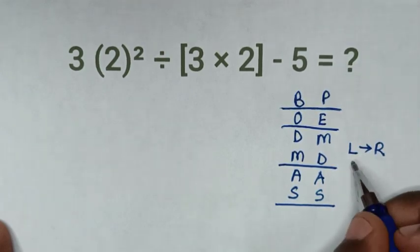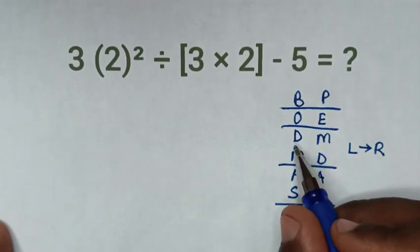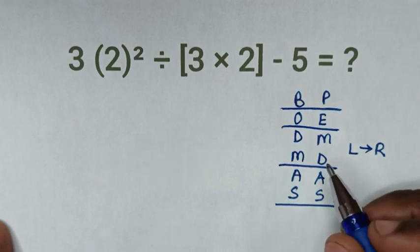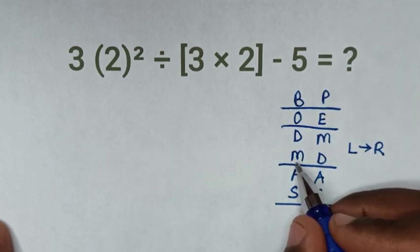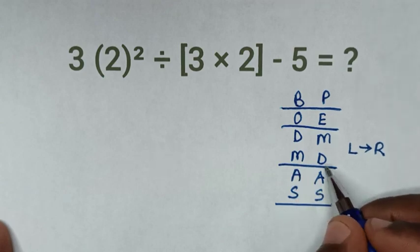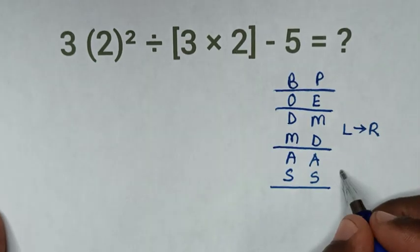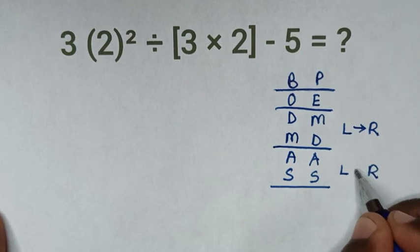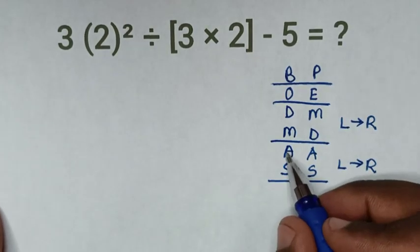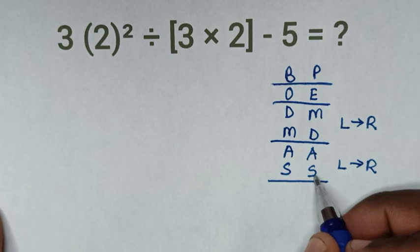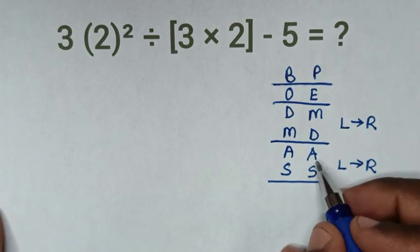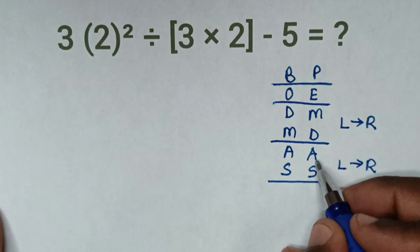If we start with division from the left, then multiplication follows. Or if we start with multiplication from the left, then division follows. Similarly, for addition and subtraction: if we start with addition from the left, then subtraction; if we start with subtraction from the left, then addition.